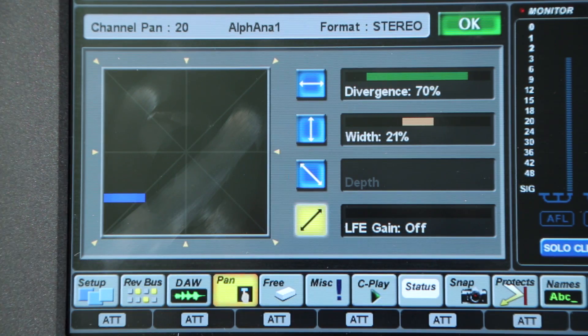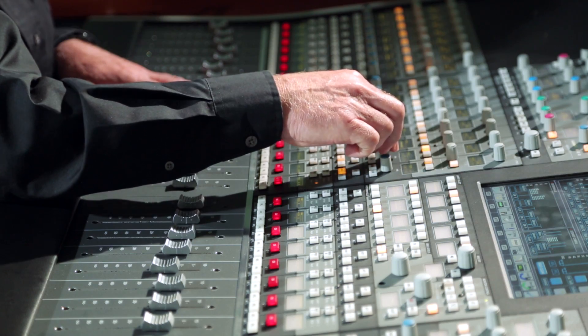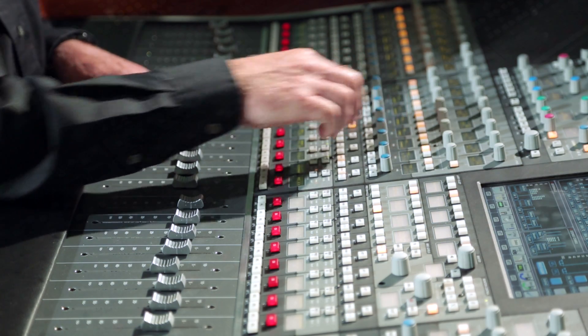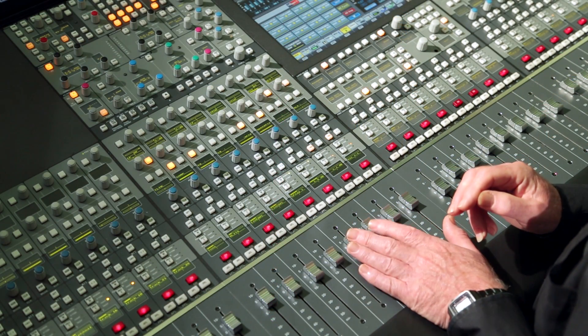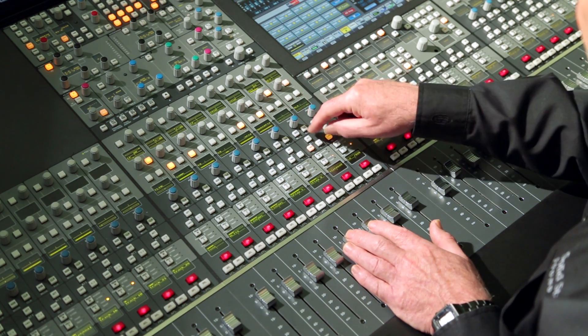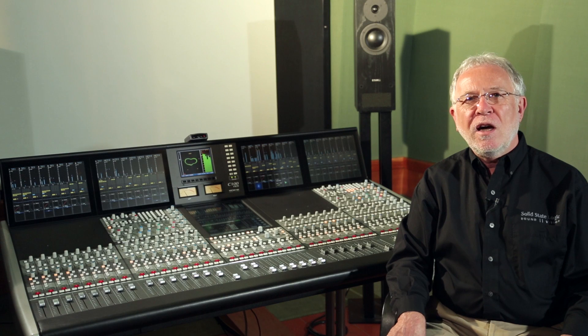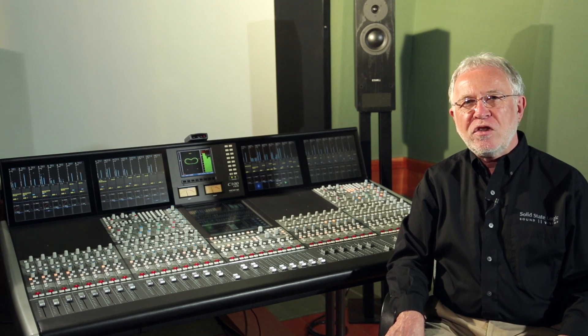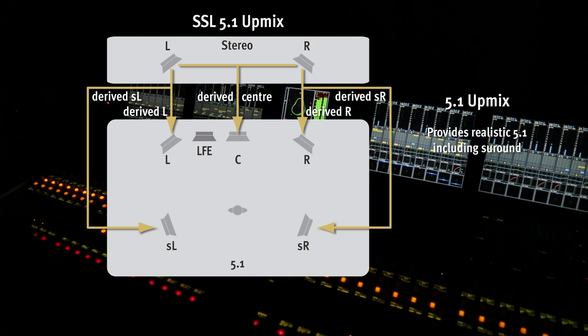C100 panning features automatic down mixing, so that a stereo channel can be routed to a mono bus, or a 5.1 channel to a stereo or mono bus, with the correct bus attenuation values automatically applied. As well as down mixing, stereo up mixing is available as an option. On any stereo channel routed to a 5.1 bus, up mixing can be selected instead of conventional level-based panning. The process extracts the direct and ambient information from a stereo signal.